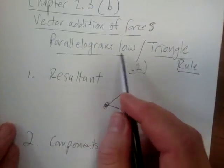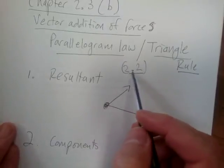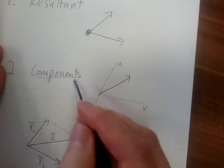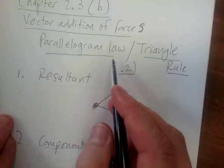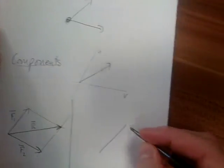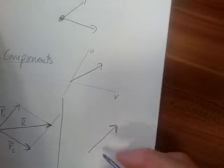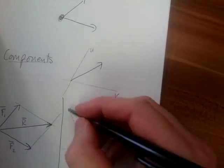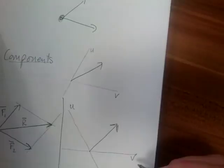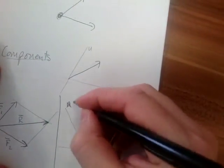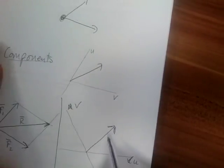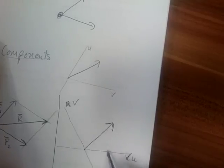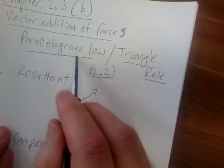So it's the parallelogram law. Read up on chapter 2.2. The alternative is if I'm trying to find a component, I also use the parallelogram law. So if I have a force and I have these two arbitrary axes — V and U — if I want to obtain the components of this force along two arbitrary axes, I also make use of the parallelogram law.